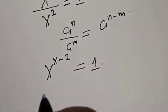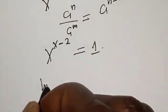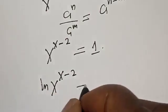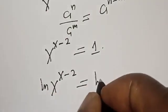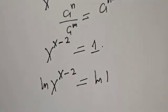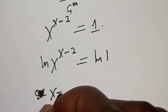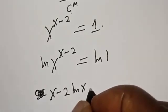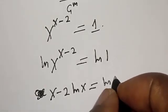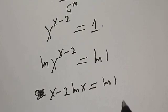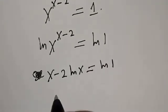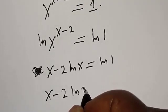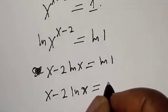Now let's take the log of both sides. We have natural log of s raised to power s minus two is equal to natural log of one. Then we have s minus two times natural log of s is equal to natural log of one, and natural log of one is zero. So we have s minus two times natural log of s is equal to zero.